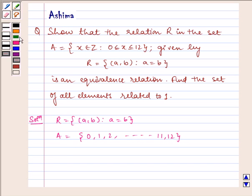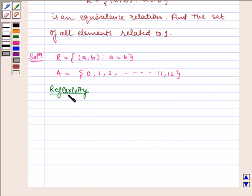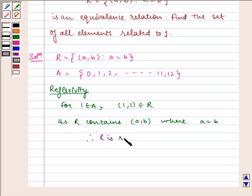Now let us check for reflexivity. Clearly for 1 belongs to A, (1,1) belongs to R as R contains (a,b) where a equals b. Therefore, R is reflexive.